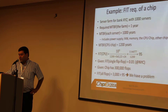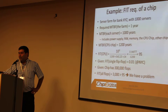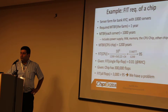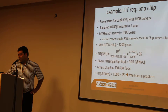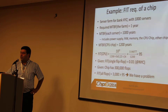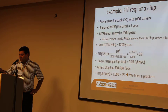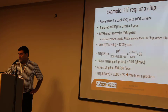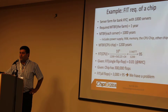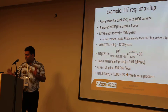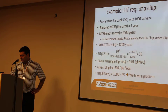We know that the FIT rate of a cell library in a certain place like New York at sea level is 0.1 FIT rate per flop. We have 300,000 flops. So the FIT rate for the flops only comes to 3,000 FIT, and the requirement is 95 — so we have a big problem to solve. These numbers are made up but close to reality, and this doesn't even include memories or transient errors.